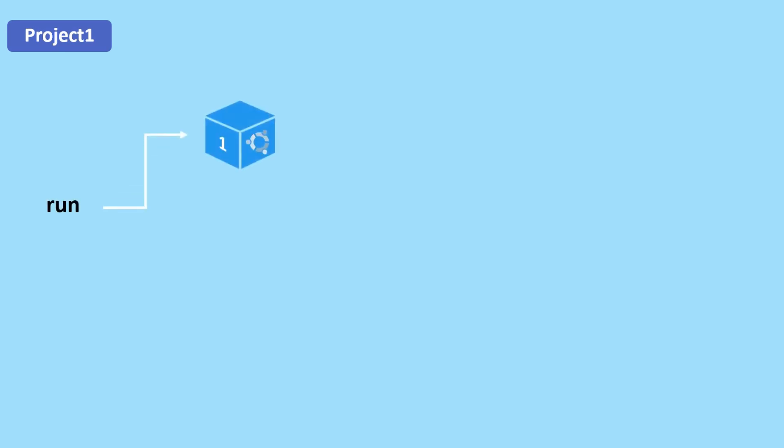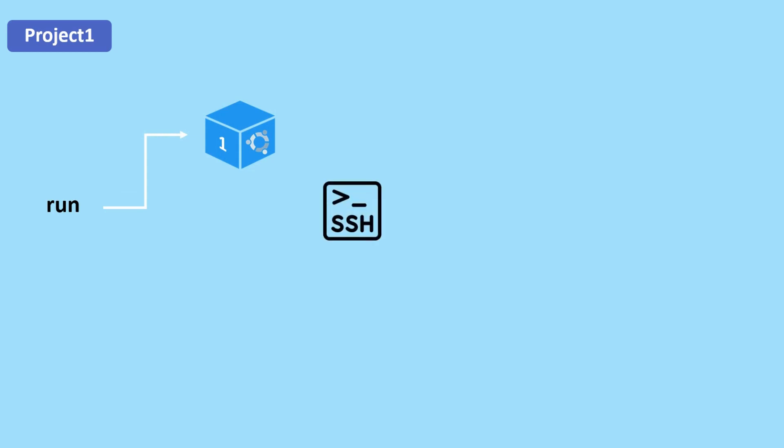First we are going to run container one, which is an Ubuntu container, after pulling it from Docker Hub. Then we will do SSH configuration. Specifically we are going to install the OpenSSH server package on container one, because it allows the container to act as an SSH server and accept incoming SSH connections. This package includes the necessary components for running an SSH server.